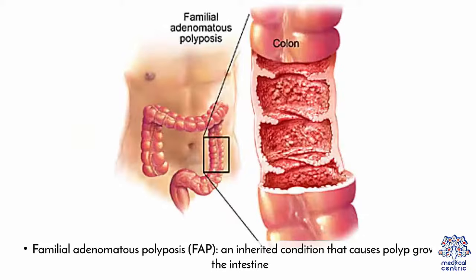Familial adenomatous polyposis, or FAP, an inherited condition that causes polyp growth in the intestine.